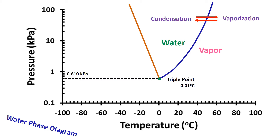Third is the freezing-melting line. Water remains ice on the left side of the freezing-melting line. As we cross the line from left to right, ice transforms to liquid water and it is the melting process. Similarly, if we cross from the right side to the left side, then liquid water transforms to ice and it is the freezing process.